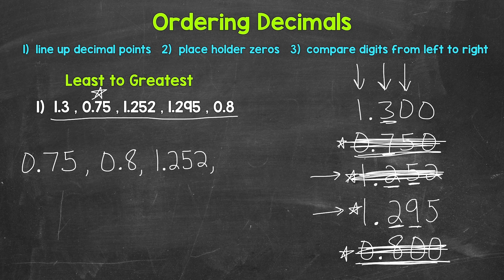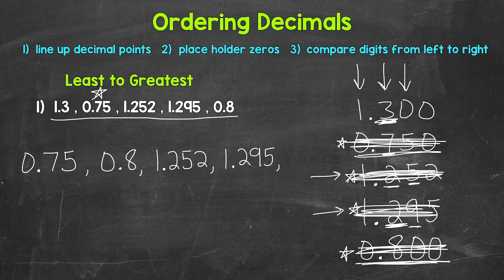Now we are down to our last two decimals. Let's compare digits — we have ones in the ones place, so let's move over to the tenths. We have a three in the tenths and a two in the tenths. Two is less than three, so one and two hundred ninety-five thousandths comes next. And we are down to our last one: one and three tenths. So that comes last. We have all of our decimals in order from least to greatest.